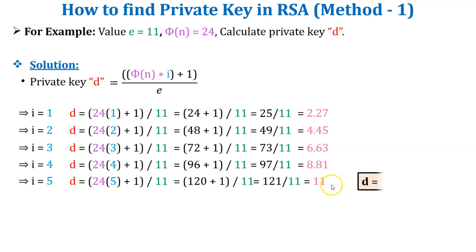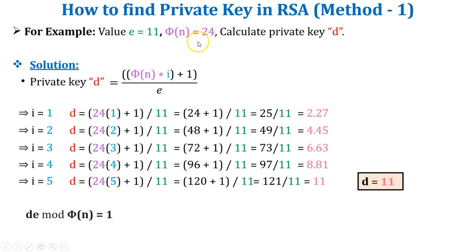We get the integer value d = 11, so it is our private key. Before considering this value as the private key, verify it using the equation: d × e mod phi(n) = 1. Here d = 11, e = 11, and phi of n = 24. So 11 × 11 mod 24 = 121 mod 24 = 1. We get the answer 1, so our private key component d = 11 is verified. This is all about method 1.